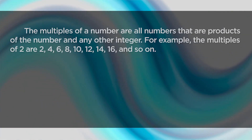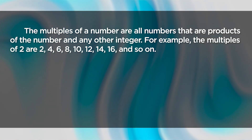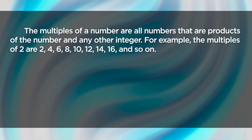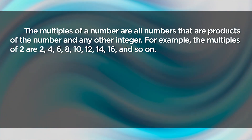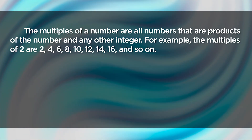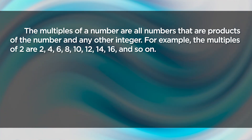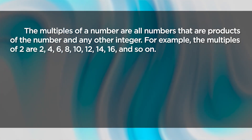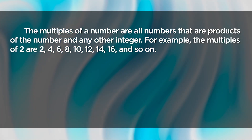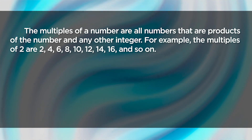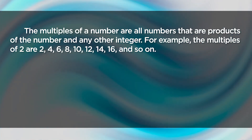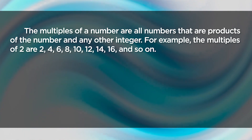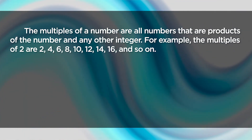The multiples of a number are all numbers that are products of the number and any other integer. For example, the multiples of 2 are 2, 4, 6, 8, 10, 12, 14, 16, and so on.